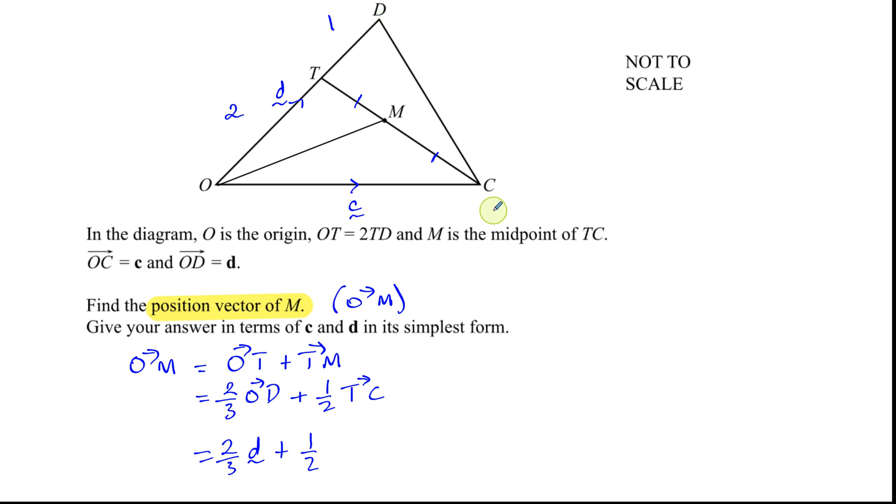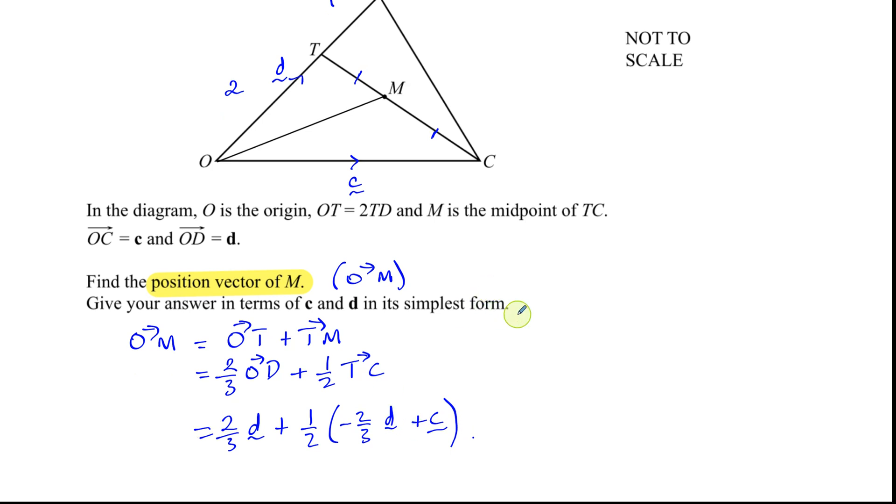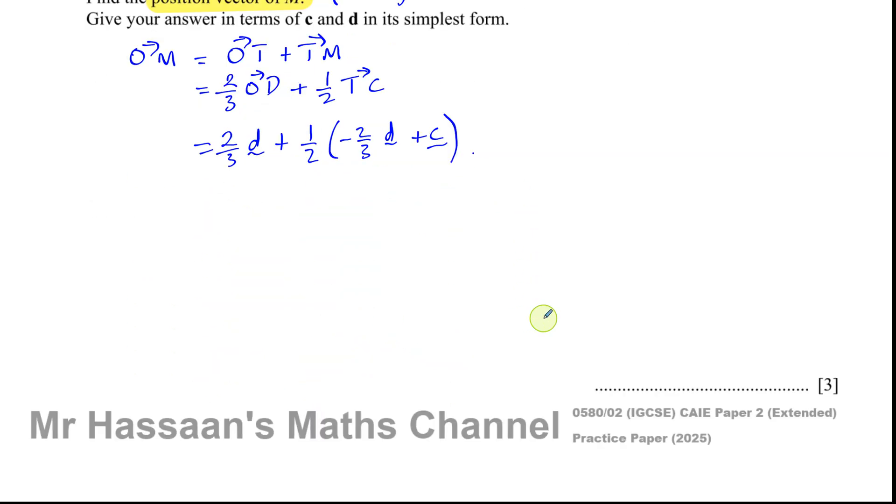So I'll go this way. I'm going to go from T to O, plus O to C. T to O is minus two thirds of d, and then from O to C, plus c. So this is the vector from T to C. And what we want is a half of that, because we're going to end up at M. We're going to go from O to T, then T to M. So this is going to give us an answer, but of course, we have to write this in its simplest form.